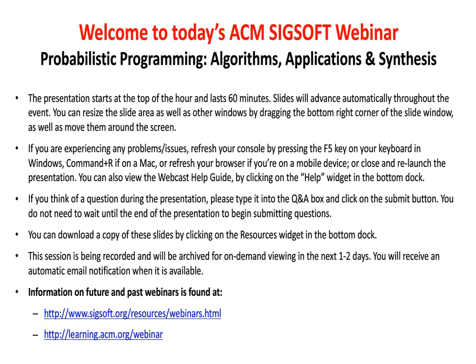Before we get started, I'd like to quickly mention a few housekeeping items. The slides will advance automatically throughout the event. On the bottom panel, you will find a number of additional widgets and resources. If you're experiencing problems with the slides or audio, press the F5 key in Windows, Command-R if you're on a Mac, or refresh your browser on a mobile device. To control volume, adjust the master volume on your computer. At the end of our presentation, we will have time for questions — please type your questions into the Q&A box at any time and click submit. This session is being recorded and will be archived; you will receive an automatic email notification when it becomes available.